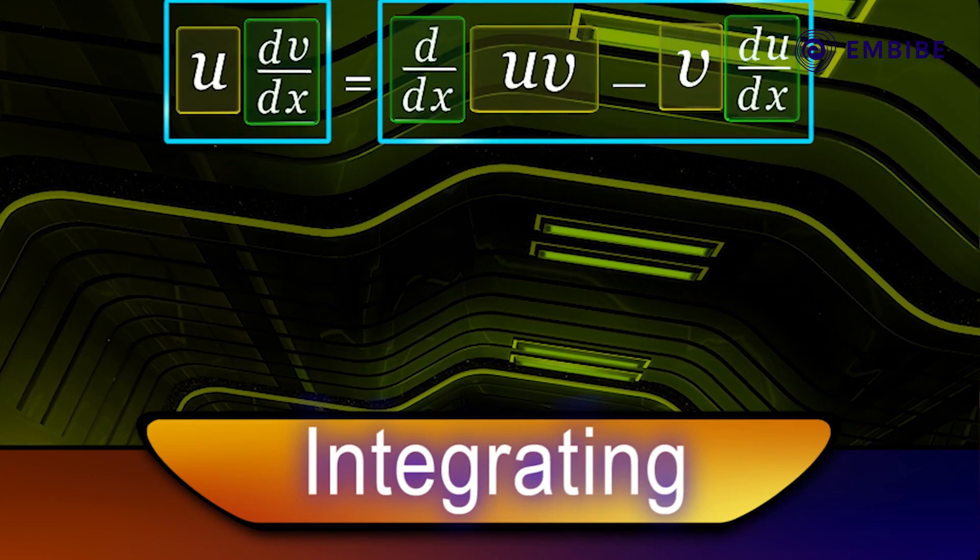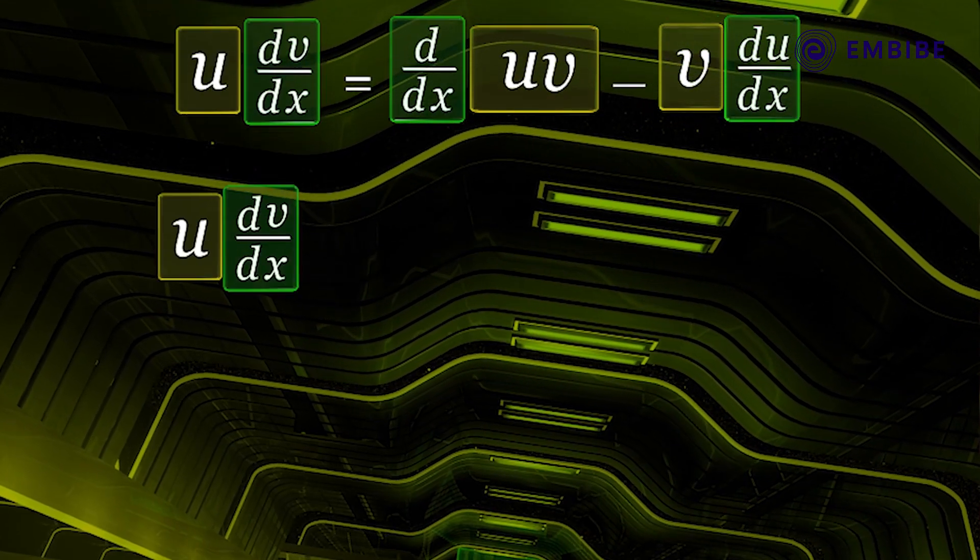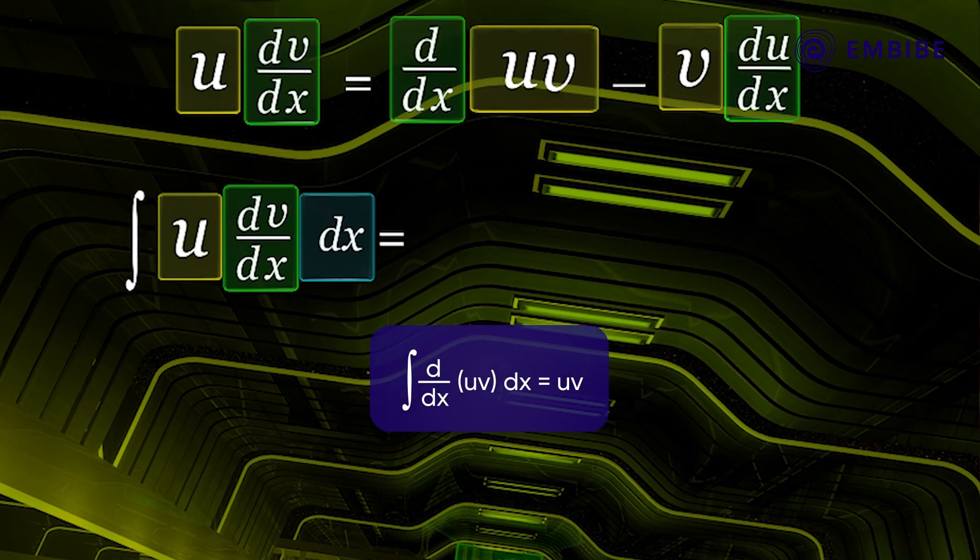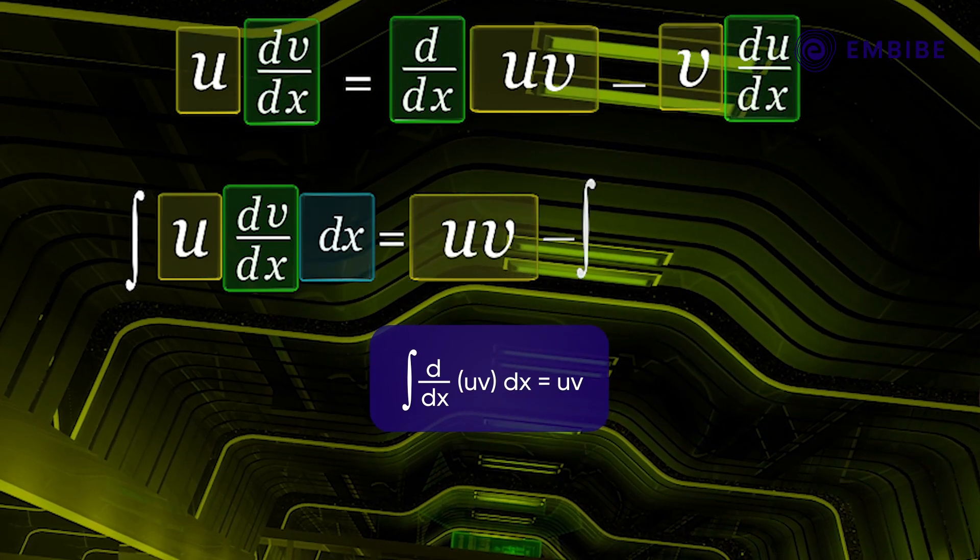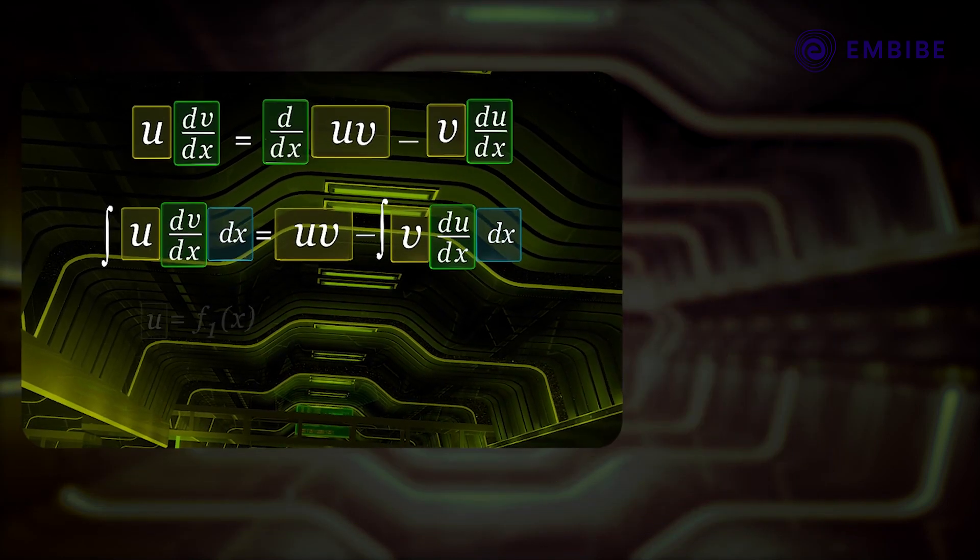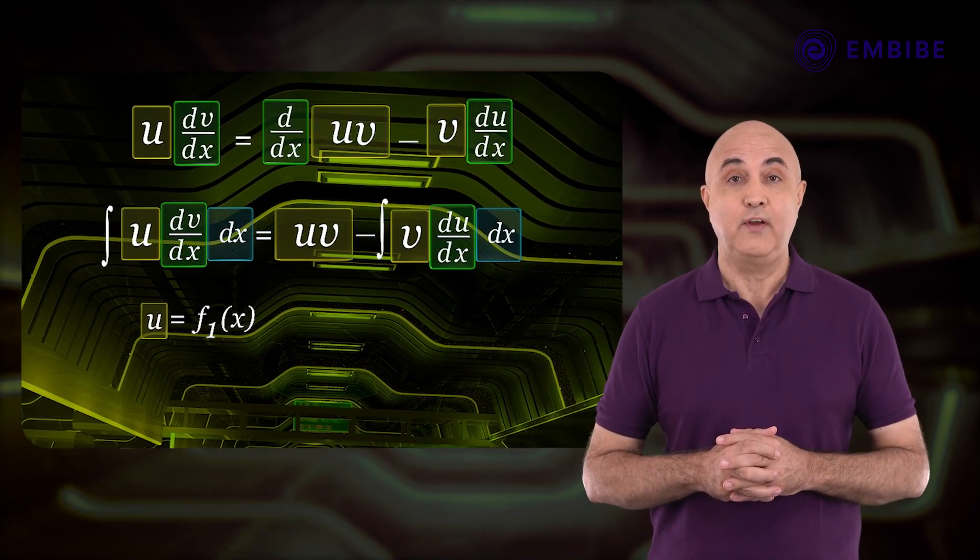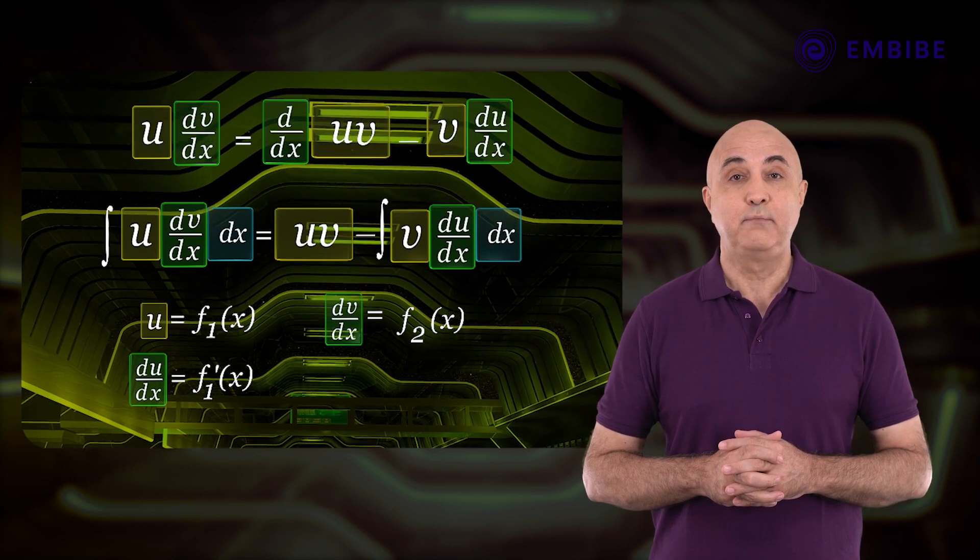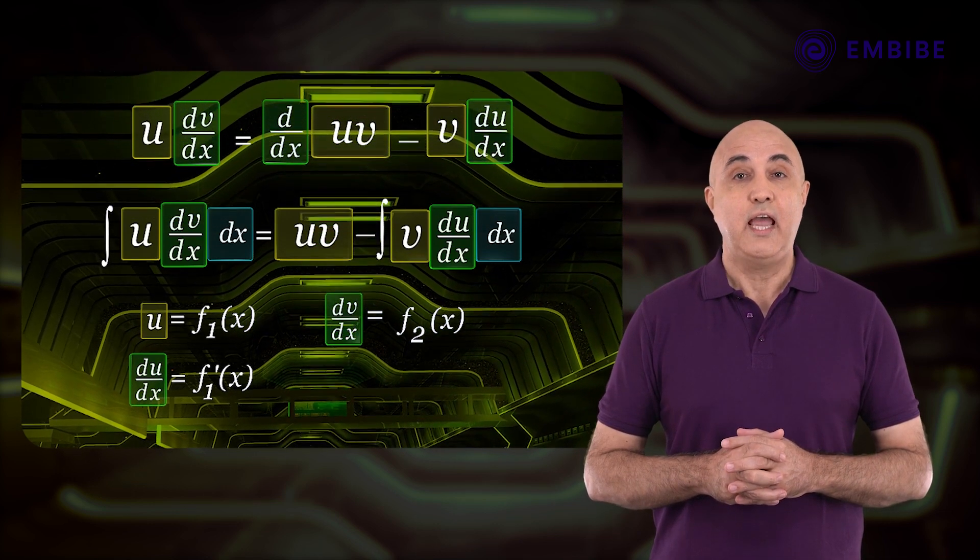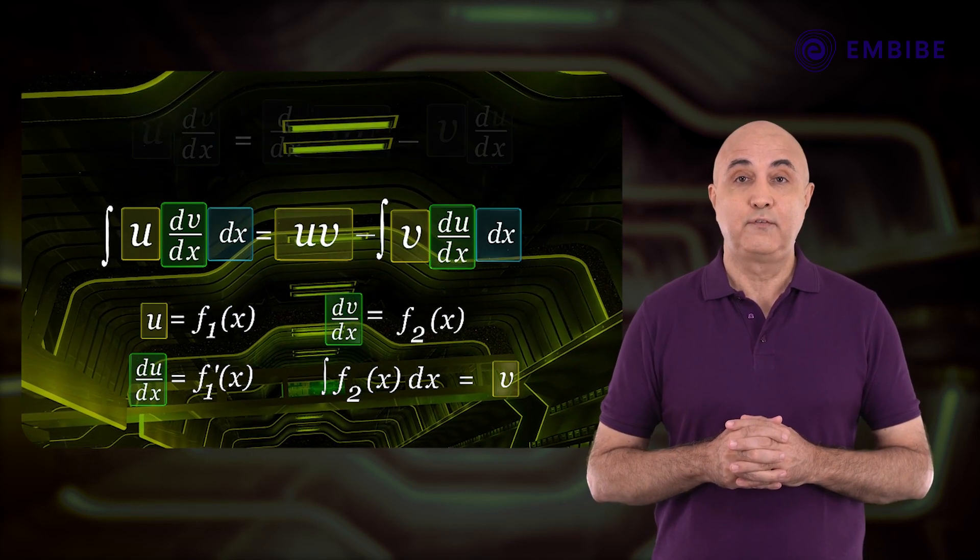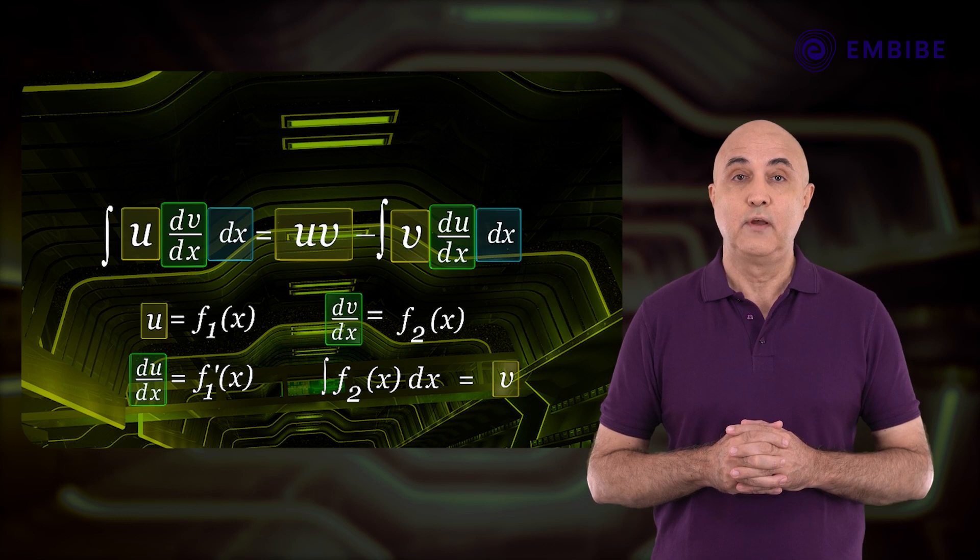Integrating both sides with respect to x, integral of u into dv upon dx dx is equal to uv minus integral of v into du upon dx dx. Let u is equal to f1 of x and dv by dx is equal to f2 of x. Therefore, integral of f2 of x dx is equal to v.